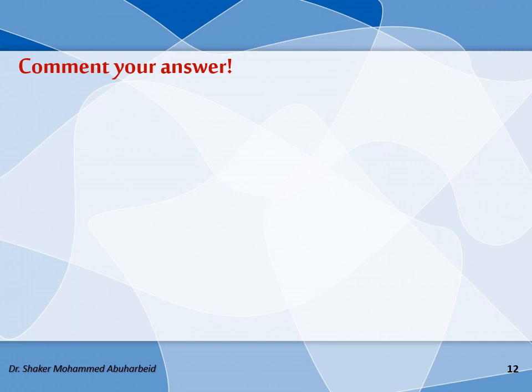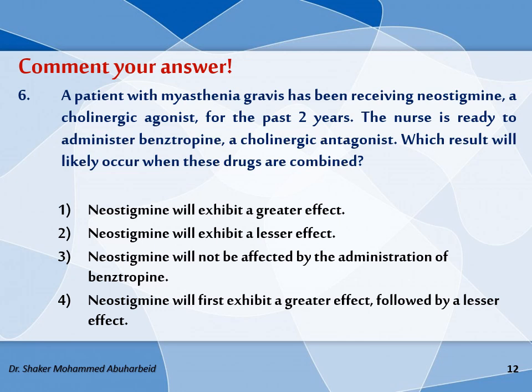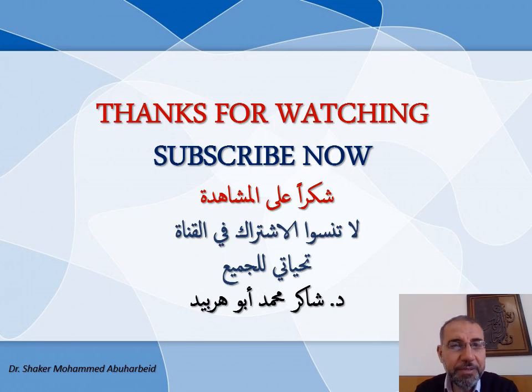The last question — please comment your answer, I will be happy to see your answers in the comments. A patient with myasthenia gravis has been receiving neostigmine, a cholinergic agonist, for the past two years. The nurse is ready to administer benzotropine, a cholinergic antagonist. Which result will likely occur when these drugs are combined? Options: neostigmine will have a greater effect; neostigmine will have a lesser effect; neostigmine will not be affected; or neostigmine will first have a greater effect followed by a lesser effect. Thank you very much for watching this video and see you in the next video.